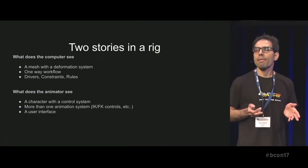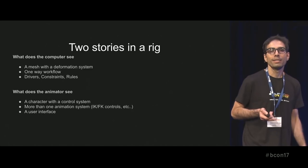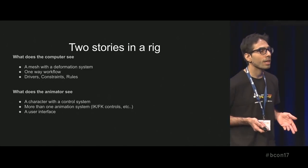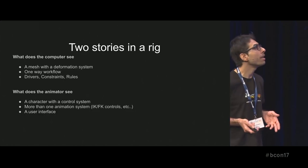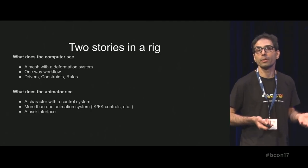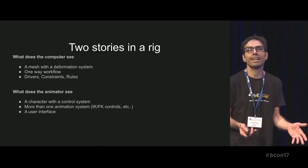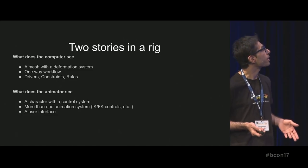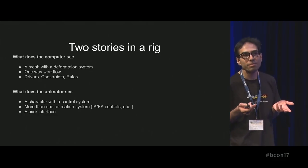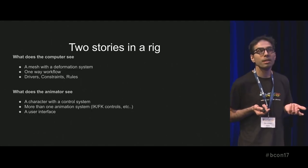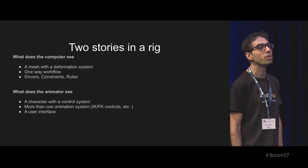Rigging is a two-fold process. What the computer or technical animator sees is a mesh — a list of points — and deformers: rules that can move the mesh, plus drivers, constraints, algorithms, and math. What the animator sees instead is a character with controls that allows him to work. While the deformation system is unique, for an animator there must be more ways to achieve one result — more systems, more chains — because sometimes we want inverse kinematics, sometimes we want to move controls directly.